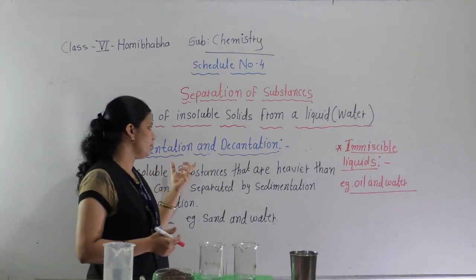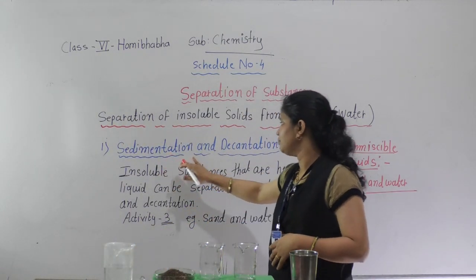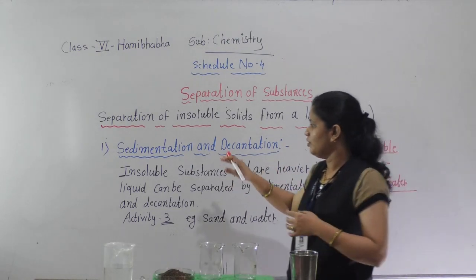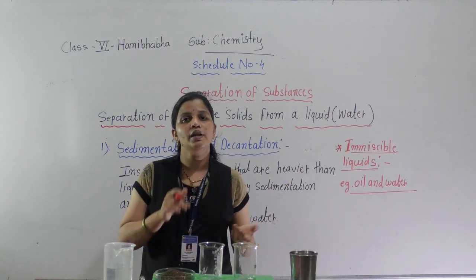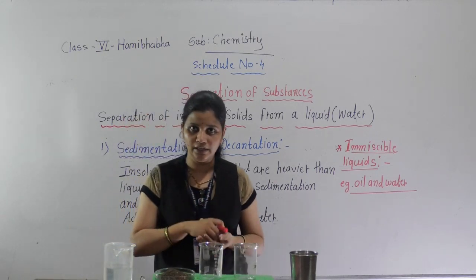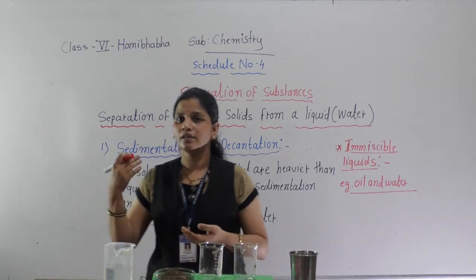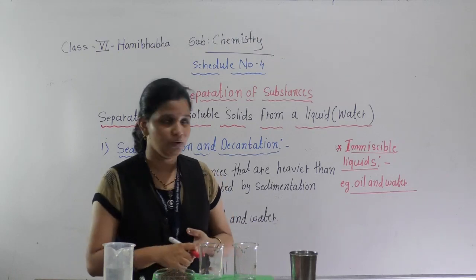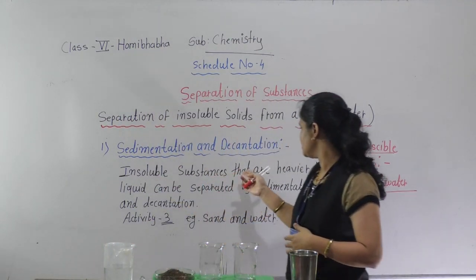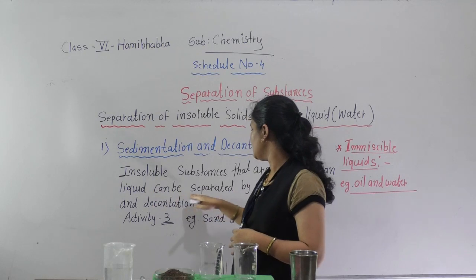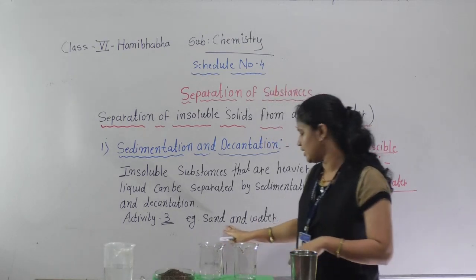The first method is sedimentation and decantation. Whenever one substance is a liquid and another is a solid that is insoluble in the liquid and its density is more — meaning it is heavier than the liquid — then it will settle down. The insoluble substances that are heavier than the liquid can be separated by the sedimentation and decantation method. For example, we can see sand and water.